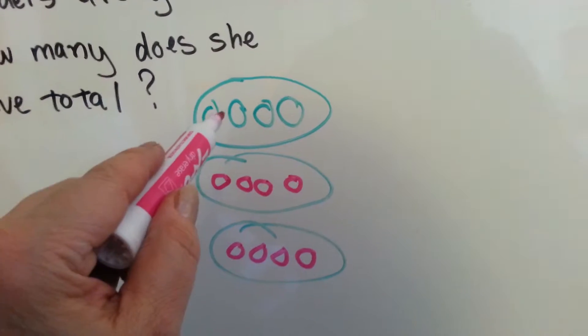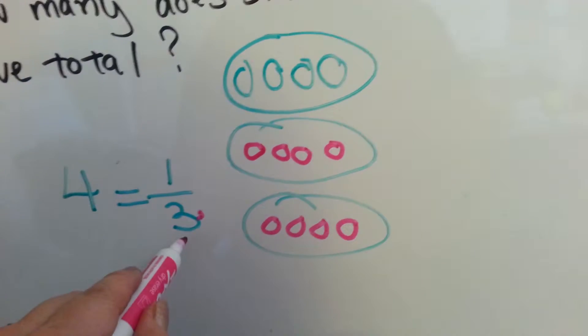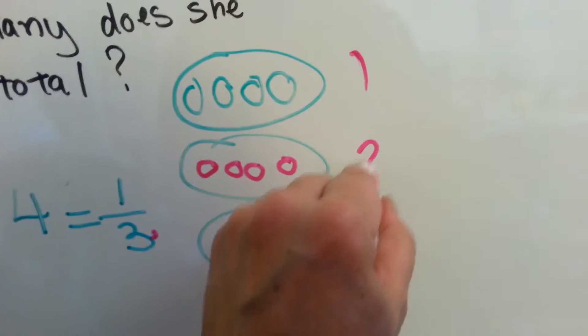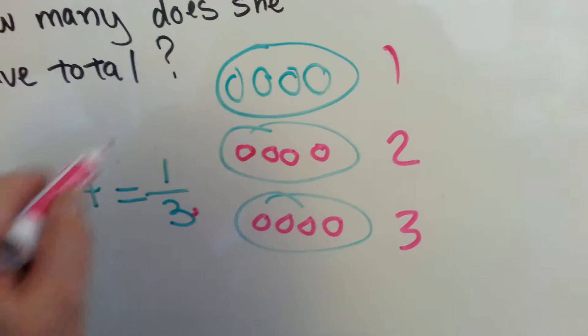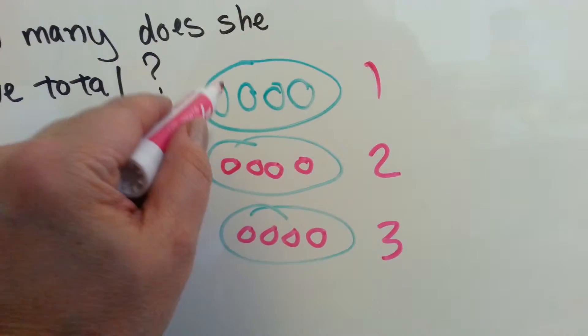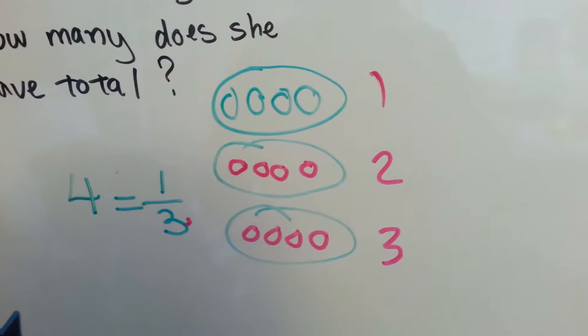If four of them is a third, then that tells us we need to make three groups. See? Because there's a three there. One, two, three. And we need to make the four one of the groups, which is what we did. So now, how many ponytail holders does she have?